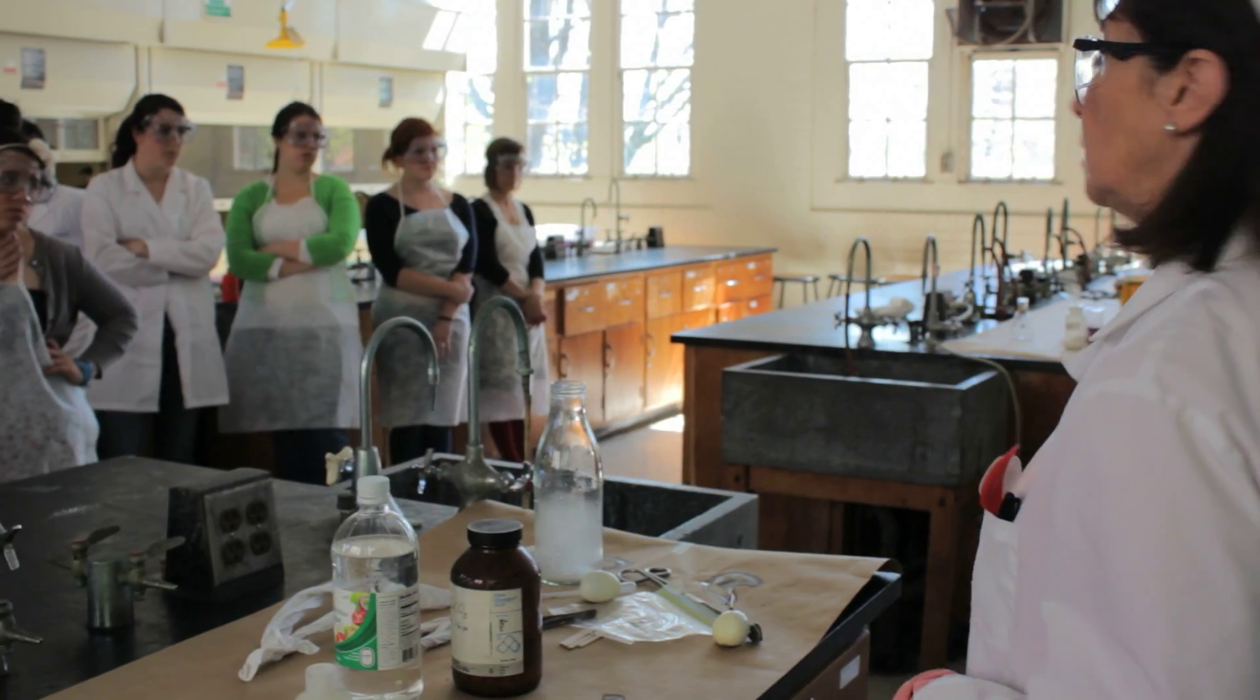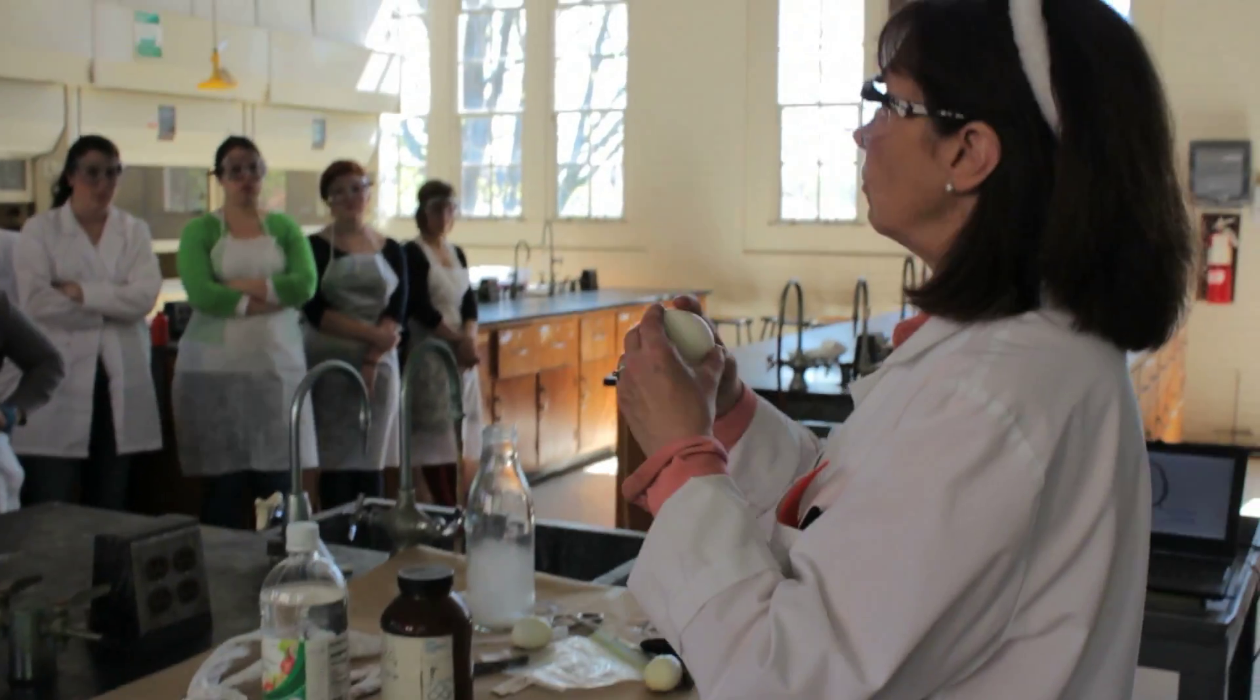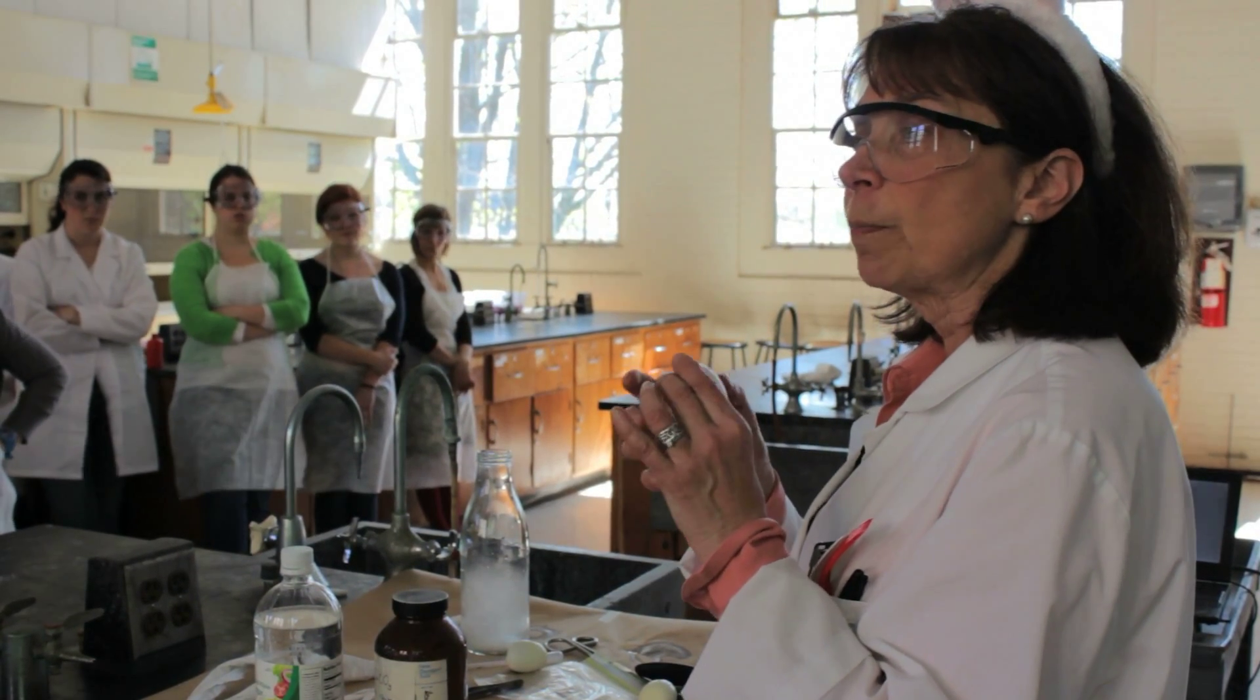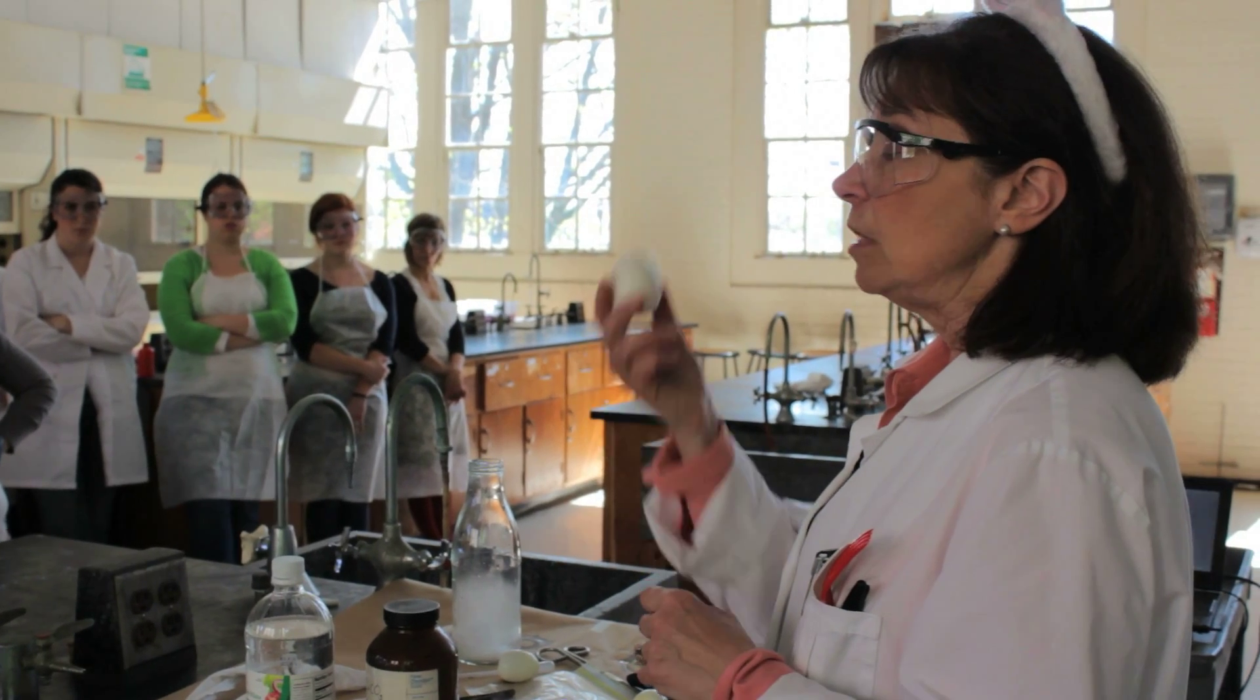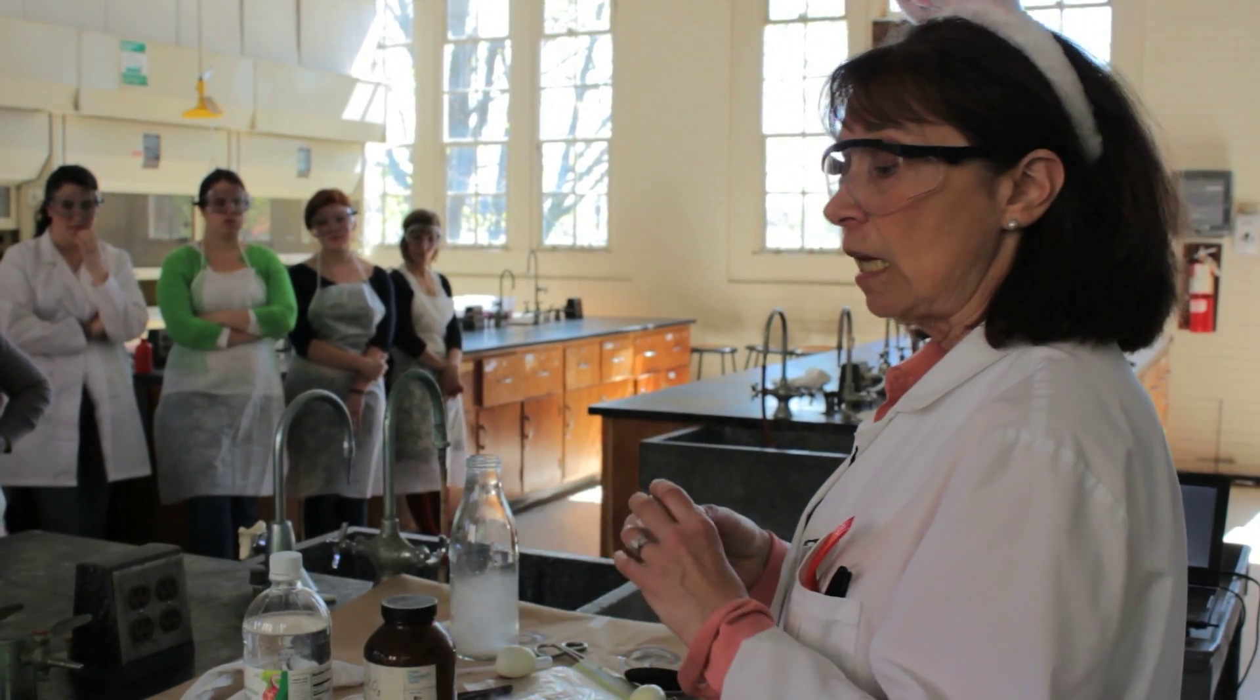The egg does have something else. It has what's called a protein cuticle around the outside. You can't really feel it with your fingers, but we can test for its presence by dyeing the egg, as we did the marble chips, in these dye baths.